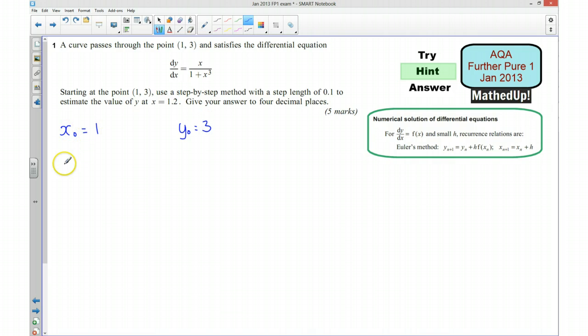I also know my next x value, x1, is going to be equal to, well I've got a step length of 0.1. So if I'll write over here that h is equal to 0.1, well that means that that's going to be 1.1.